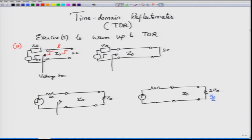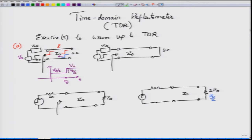When the step propagates and arrives at an open circuit, there will be a reflected wave. Because the reflection coefficient ΓL = +1 for an open circuit, the reflected wave has the same shape and travels back. Monitoring the voltage at the input terminals, you initially see a launched voltage of V0/2. At time 2Td, this voltage jumps by an additional V0/2 due to the reflected wave, giving a total voltage of V0, which remains constant thereafter since there are no further reflections.